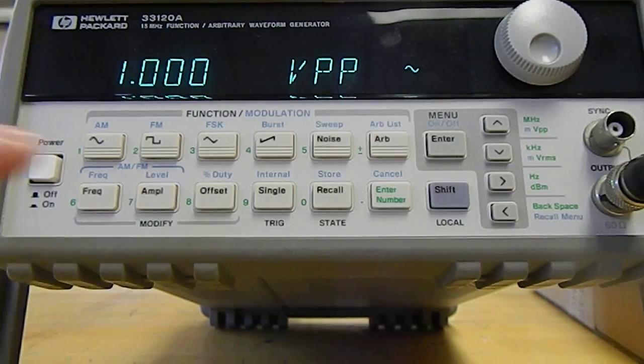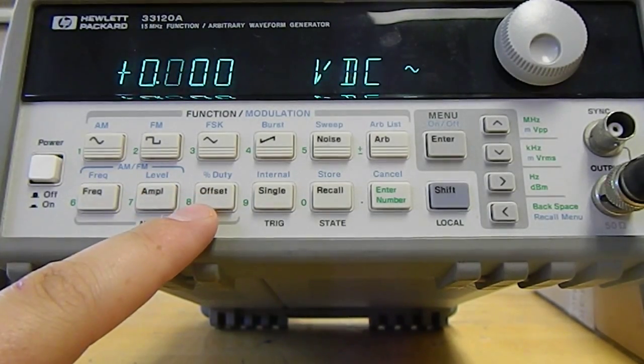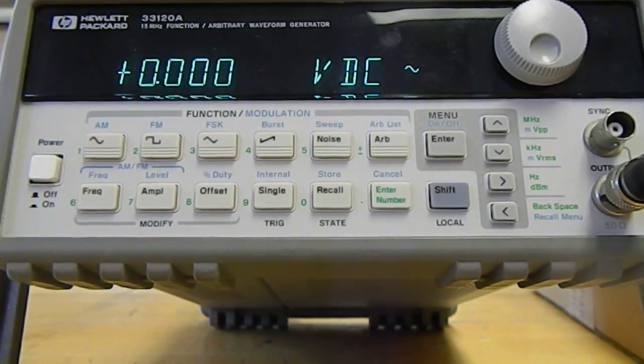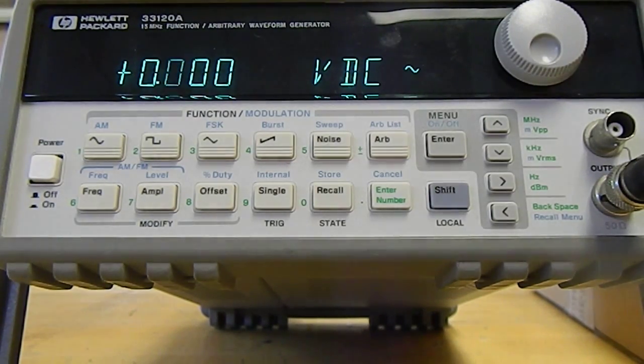The last thing you might want to do is change the offset. What the offset does is it changes the center of the repeating waveform. So if you're, for example, applying a step and you want it to be zero and then go to a voltage and then return to zero, you can change the offset in that way.